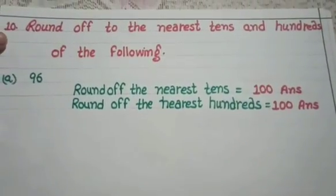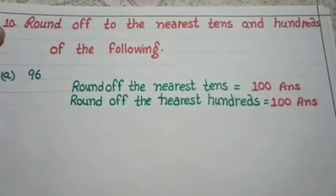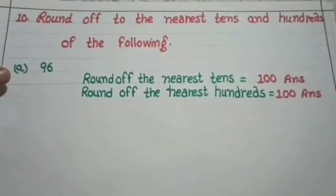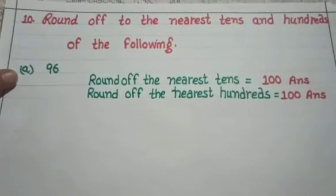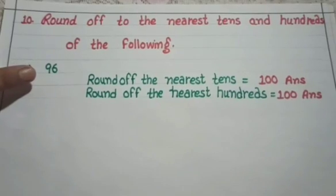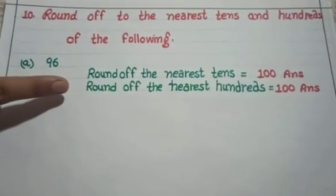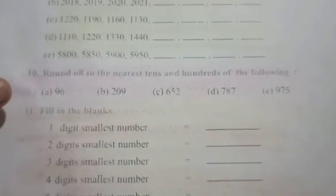You have to write down the 10s problems in your notebook like this. First, write the number 96 and then solve it. Now you have to solve parts B, C, D, and E by yourself. Thank you and see you again.